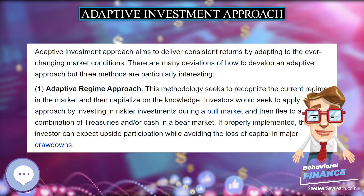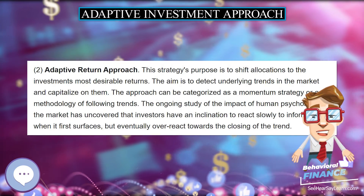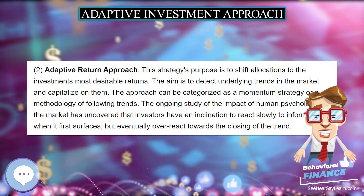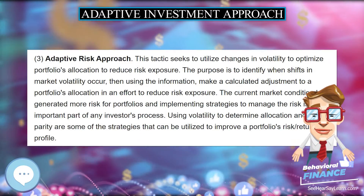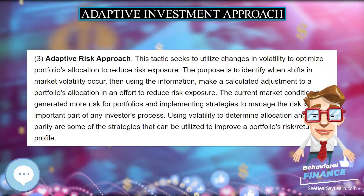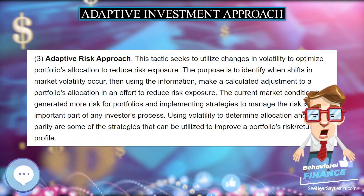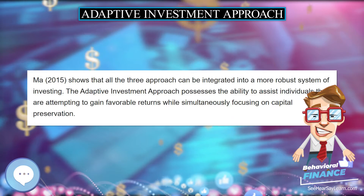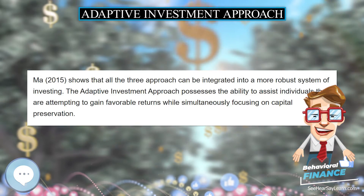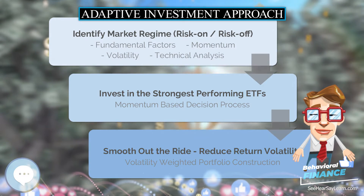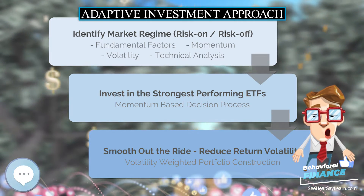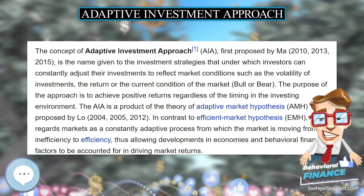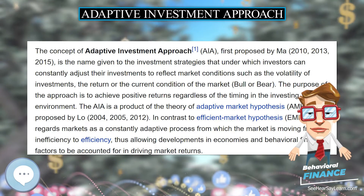The two deep bear markets in the first decade of the 21st century challenged conventional wisdom such as the Efficient Market Hypothesis and Modern Portfolio Theory (MPT). Many of the assumptions behind these theories — like the assumed direct positive relationship between risk and return, stable volatility, and correlation across time — were shown to fall short when attempting to explain behavior in the market.